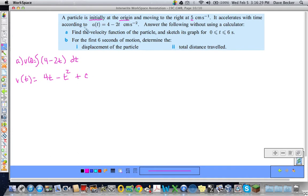But we know that the initial velocity is 5 centimeters per second, and initial is when t equals 0. So when t equals 0, the velocity equals 5. So that means 5 would equal 4 times 0 minus 0 plus C, which is equal to C. So velocity, V(t), my velocity function, is 4t minus t squared plus 5.